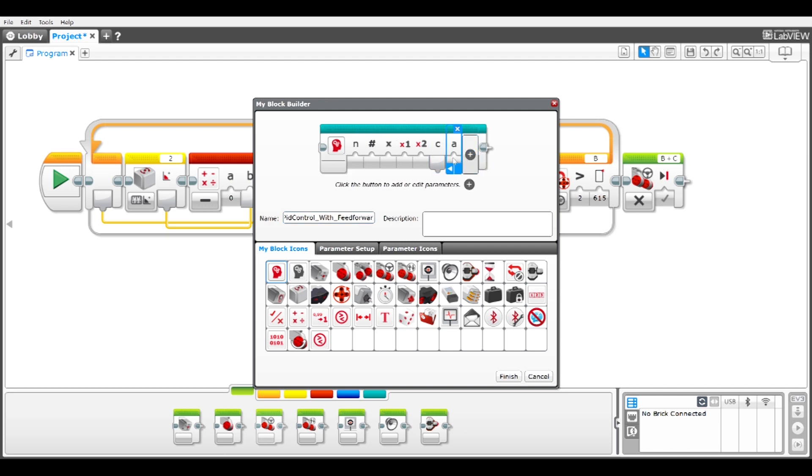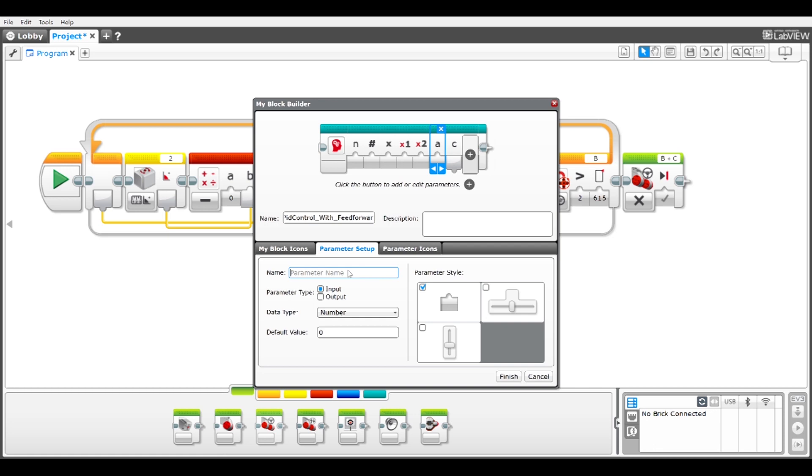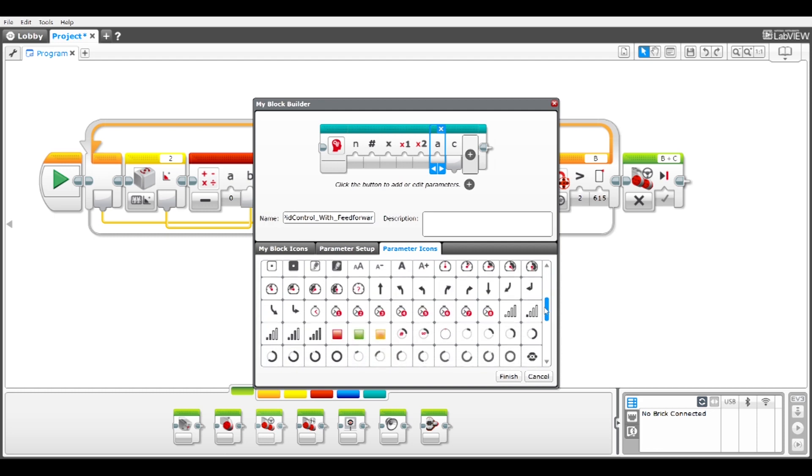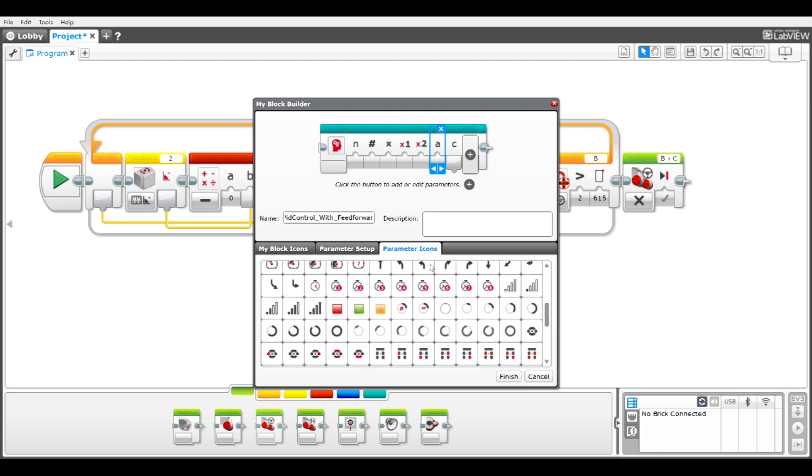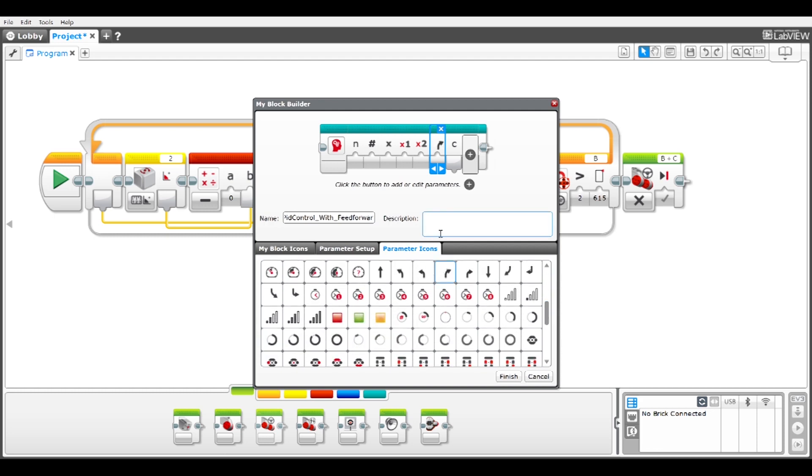The PID Control MyBlock has five input parameters: loop number, error, and the PID Control gains kp, ki, and kd. I'll add another input parameter called feed forward and give it a turning icon and select finish to make those changes.